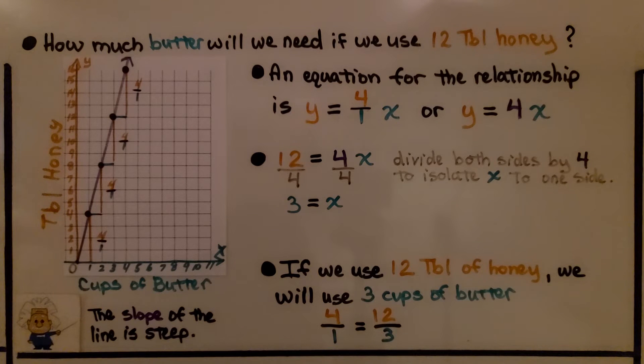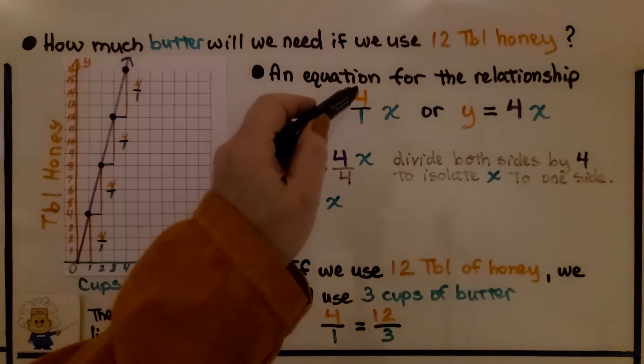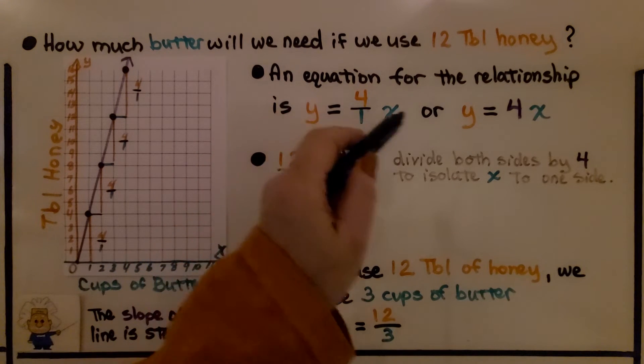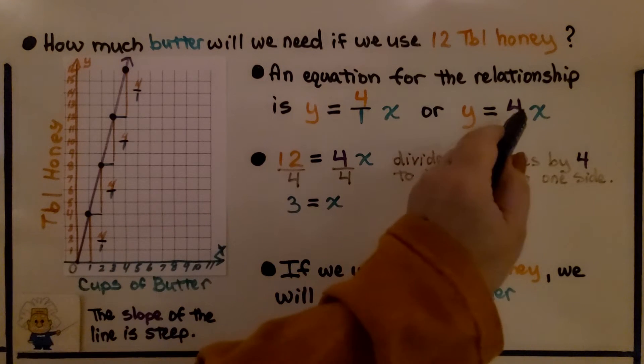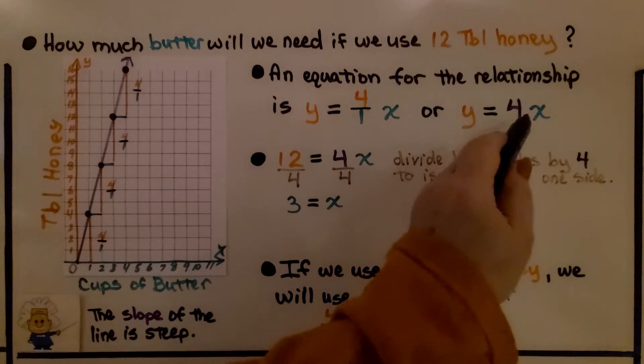So how much butter will we need if we use 12 tablespoons of honey? An equation for the relationship is y is equal to 4 over 1x, or since 4 over 1 is just 4, we could say y is equal to 4x.